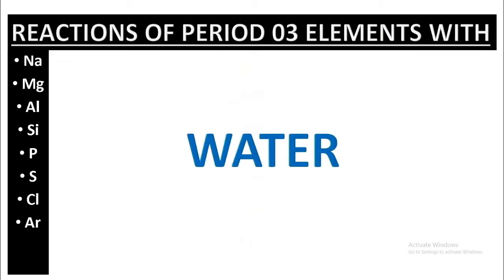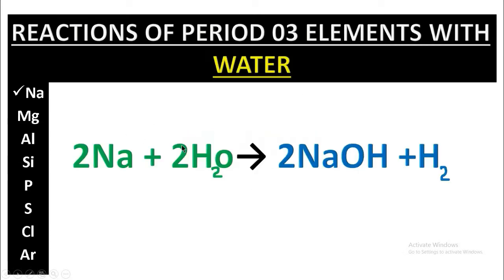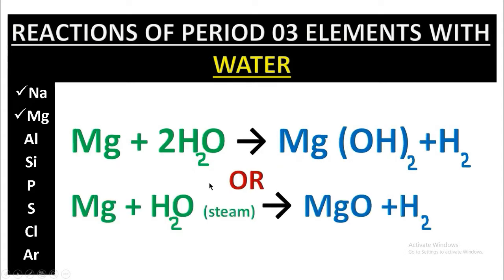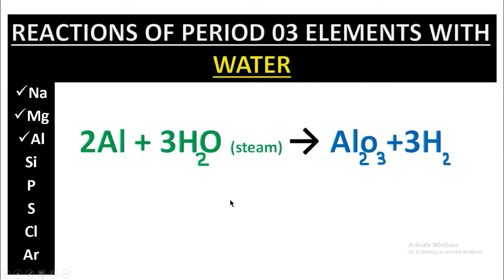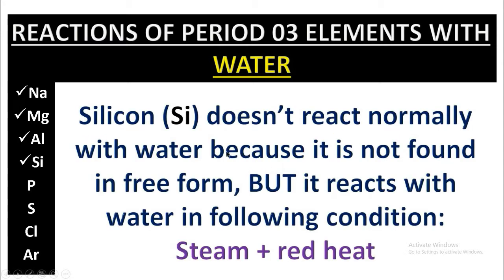First of all, we will discuss the reactions of Period 3 elements with water. Here is sodium's reaction with water, and here is magnesium's reaction with water. Magnesium gives two reactions with water. This is the reaction of aluminum with water — remember the water is in steam form.